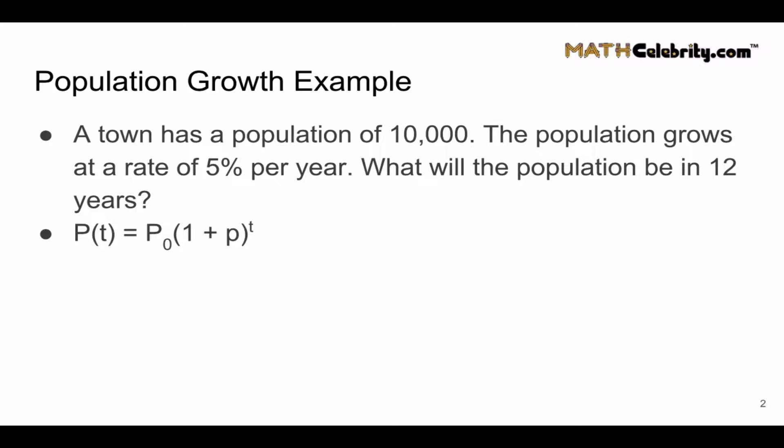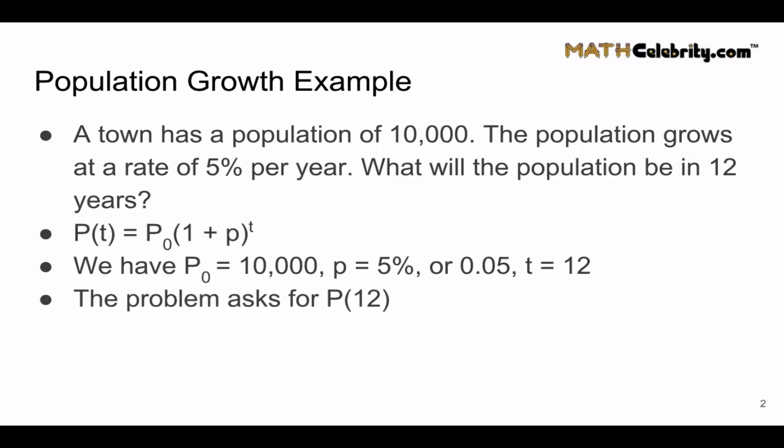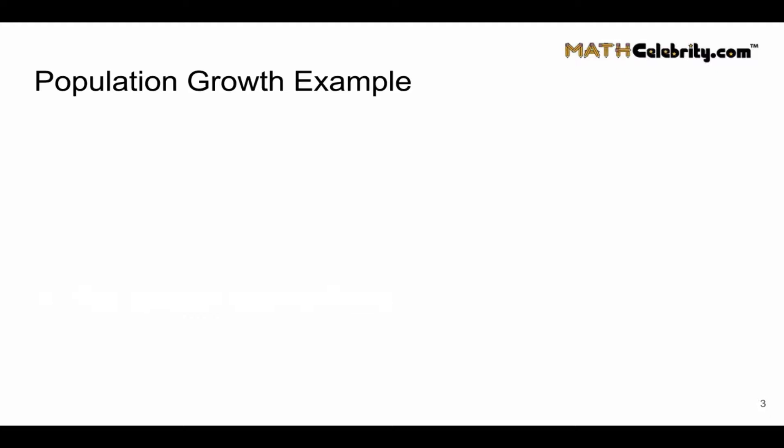I'm listing our formula again to calculate population growth. So we're given P sub naught equals 10,000, P equals 5%, or 0.05 in decimal form, and T equals 12, and the 12 being years. And we want to know what is P of 12, so the population 12 years from now, given the growth rate. So let's go ahead and plug in our numbers and see what we get.